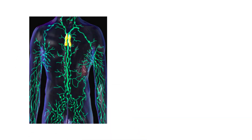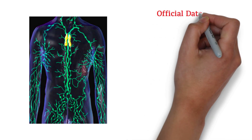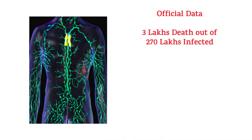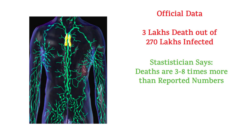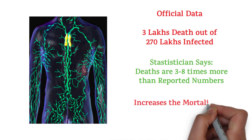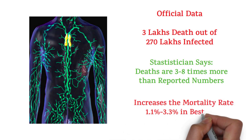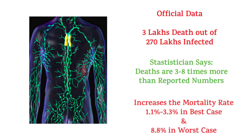It is very important. So now we know a lot about innate immune cells — where they live, how they protect us, their functions. Everything seems picture perfect. Then why are millions of us getting sick? Official data shows around 300,000 deaths out of 27 million infected. Many statisticians around the world have said that the deaths are 3 to 8 times more than reported, which increases the mortality rate from 1.1% to 3.3% in the best case and 8.8% in the worst case approximately.